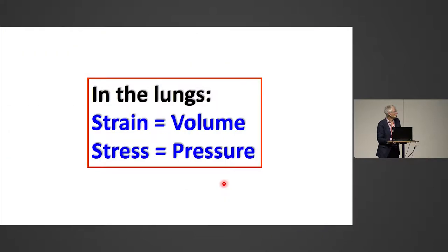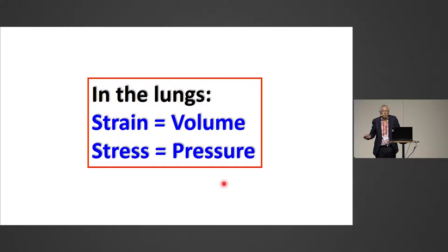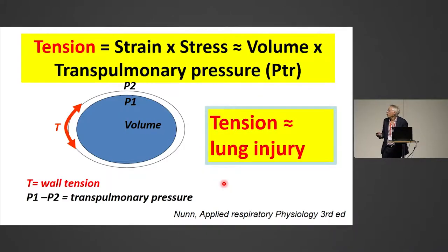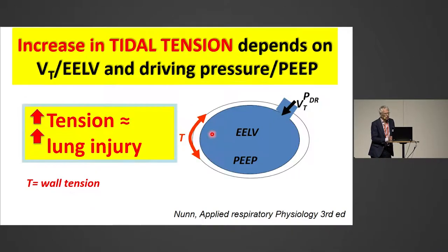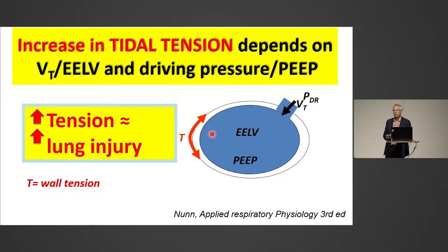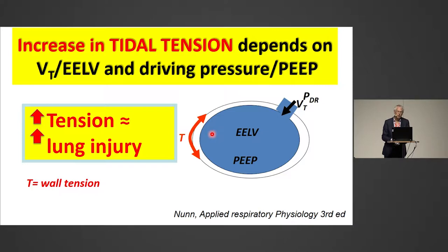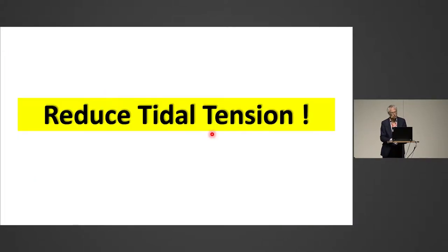And in fact, this is not a bad model, because in the lungs, strain is the same as volume and stress is pressure. Wall tension will increase, and it's dependent on transpulmonary pressure times volume. Tension is associated with lung injury. The fractional increase in tidal tension depends on tidal volume divided by end-expiratory volume, and driving pressure divided by transpulmonary end-expiratory pressure. Increased tension means increased lung injury.